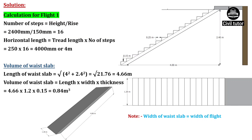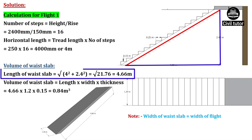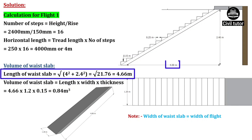To calculate the volume of waste slab, we need to know the dimensions of waste slab. The length of waste slab will be calculated by applying the Pythagoras theorem in this triangular section. So the length of waste slab will be equal to the square root of base squared plus perpendicular squared. The base of this triangle is 4 meter and the perpendicular is 2.4 meter. On substituting these values, the length of waste slab will be equal to 4.66 meter.